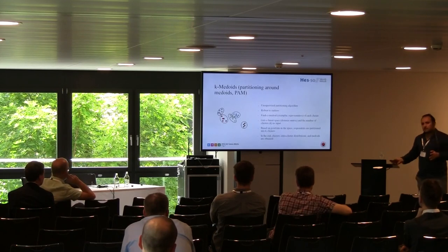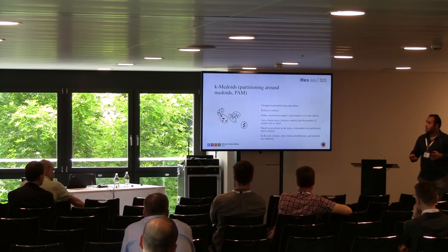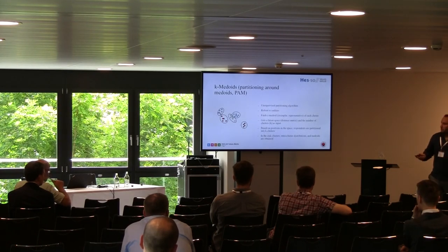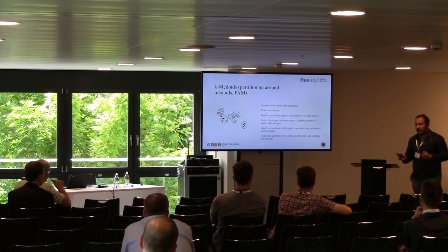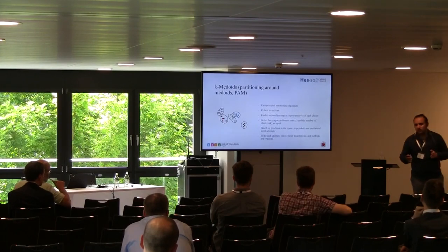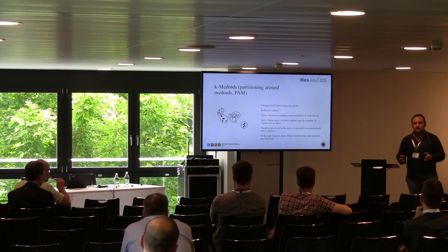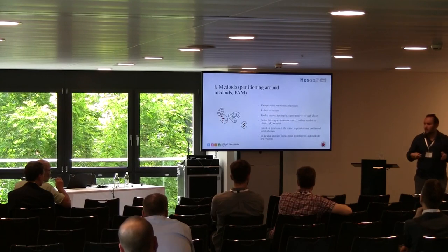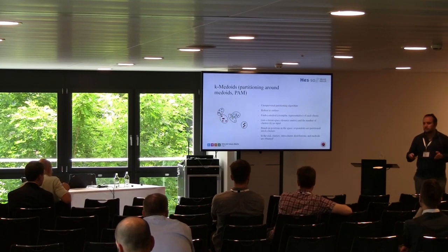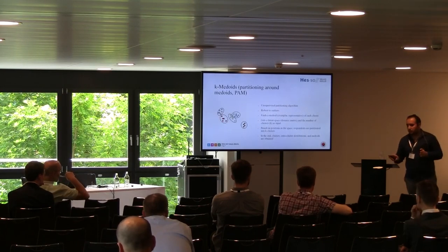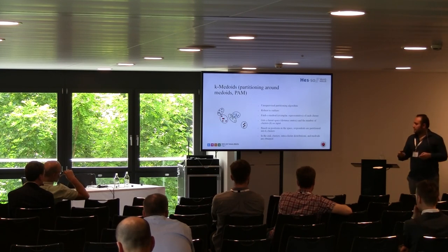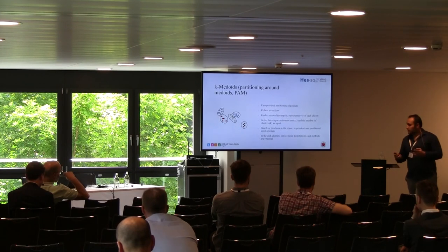Once we have the latent space and know the positions of instances, we use a partitioning algorithm that partitions instances based on their positions in this latent space — we use k-medoids. Medoids are exemplar or central types of clusters; they have the lowest cumulative distance towards their cluster members, so they represent their clusters. The algorithm works by first randomly assigning k medoids, then distributing other instances towards these k medoids based on their positions in the latent space. It updates in a loop, and when the loop is saturated — meaning root mean square error no longer decreases — it stops and provides medoids, cluster members, and intra-cluster distributions.